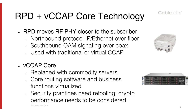Looking deeper into the technology: RPD moves the RF device closer to the subscriber. The northbound protocol is IP/Ethernet over fiber, and the southbound interface is QAM signaling over coax. RPD is used with virtual CCAP but can also be used with a traditional CCAP. VCAP core technology replaces proprietary fixed-function hardware with a commodity server running VCAP core as a VNF, with core routing and business functions now virtualized. There is a downside — new security issues pop up and security processes need retooling, and there may be new crypto performance issues to consider.